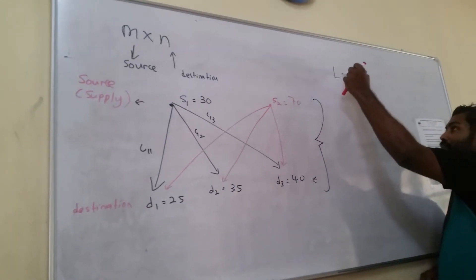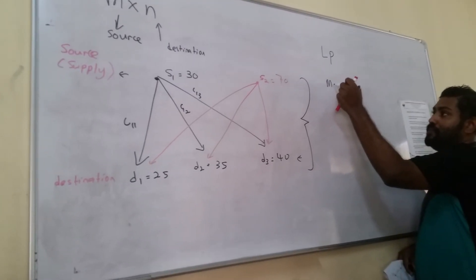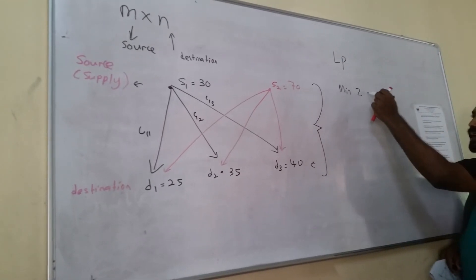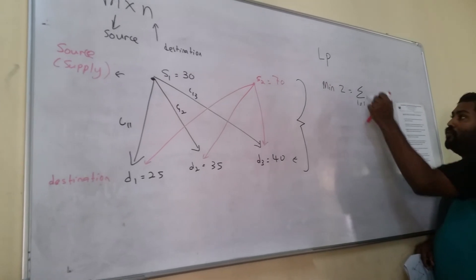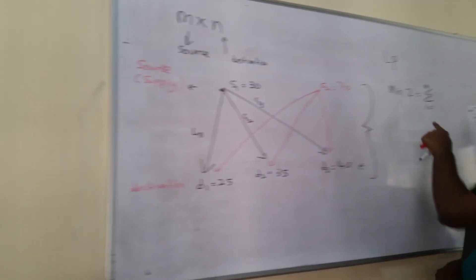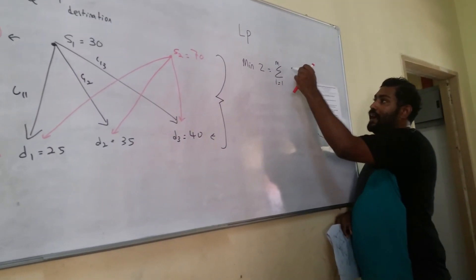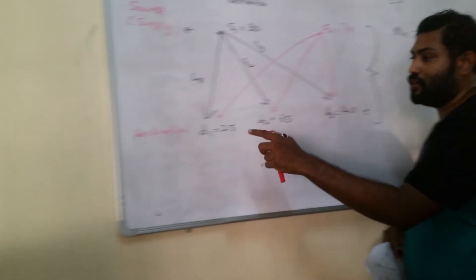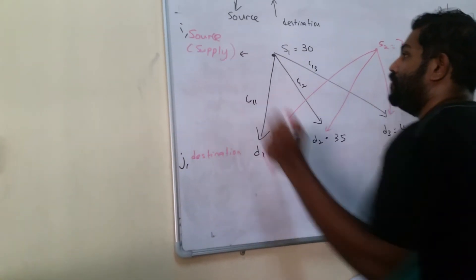Linear programming model where our aim is to minimize our cost. That's why I call here minimize Z, which depends on i equals to 1, i means for the supplier, summation of i equals to 1 until m. And next is j equals to 1 until n, where j is considered for destination and i is considered for source.